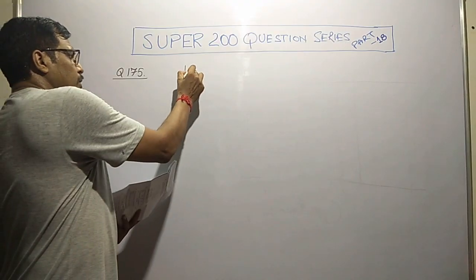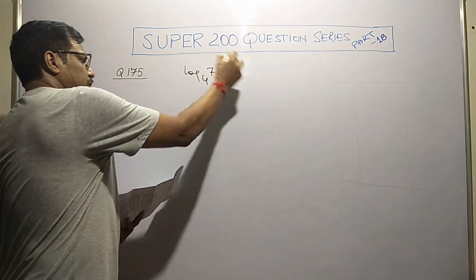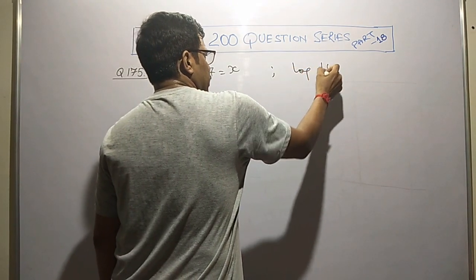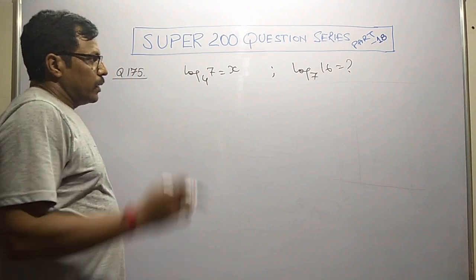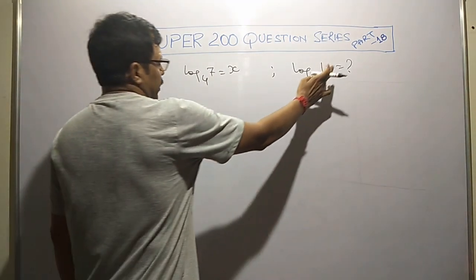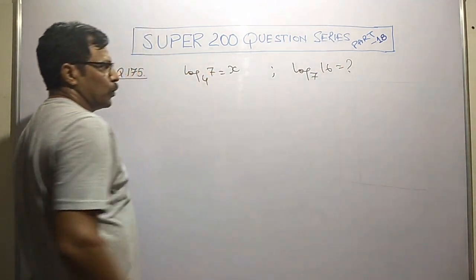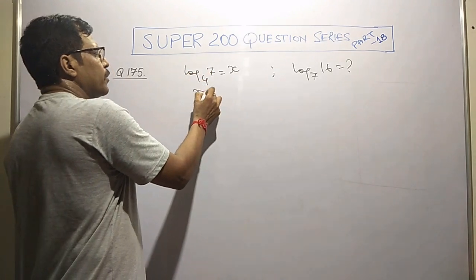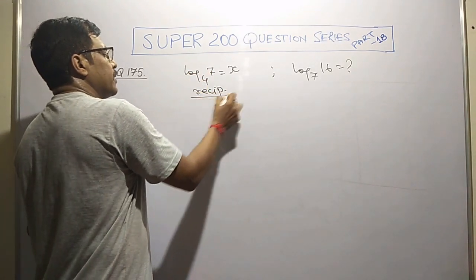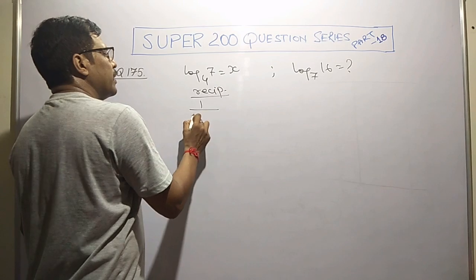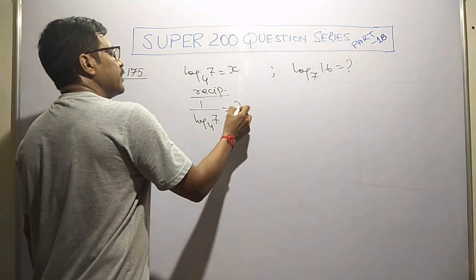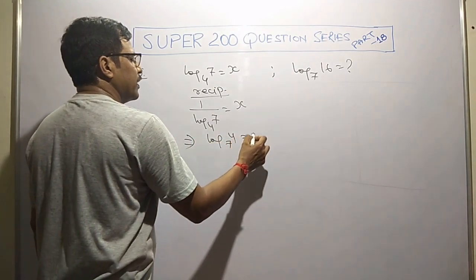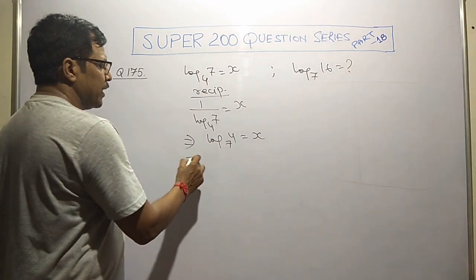Question number 175. We are given log 7 to the base 4 equals x, and we need to find out log 16 to the base 7.